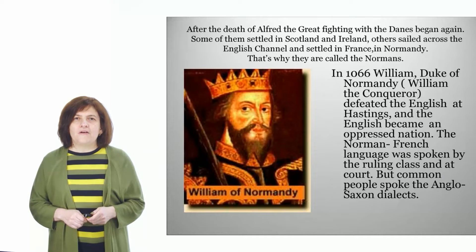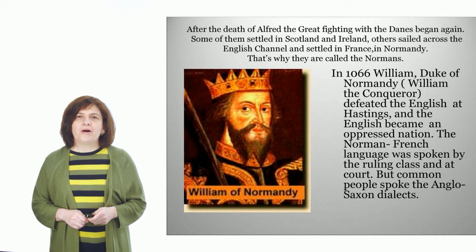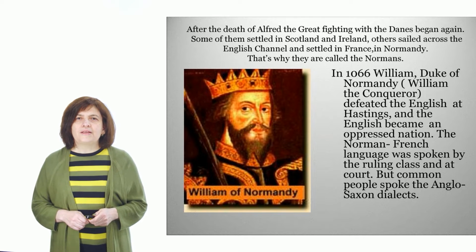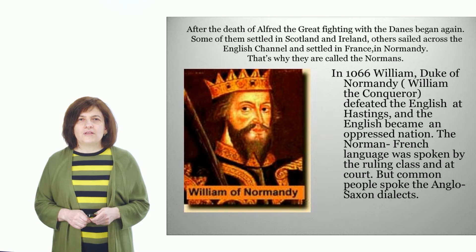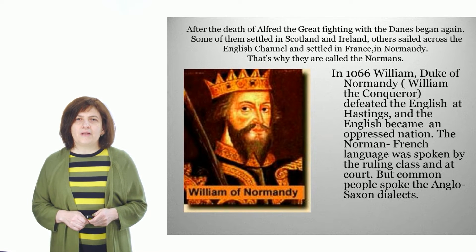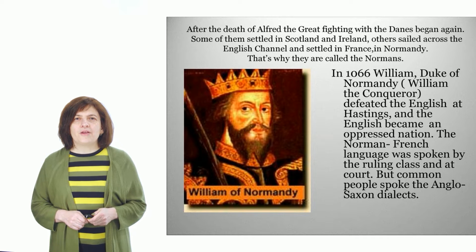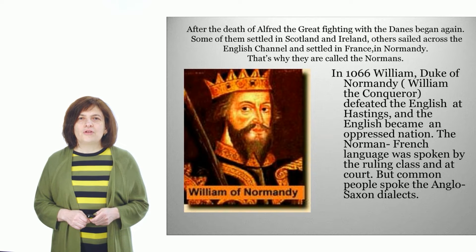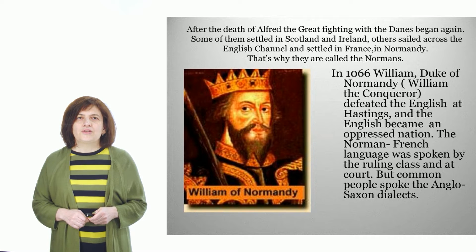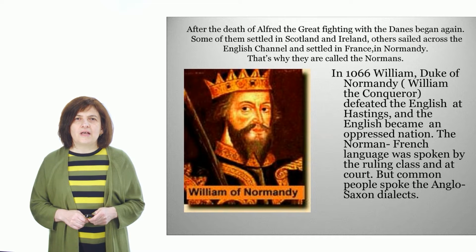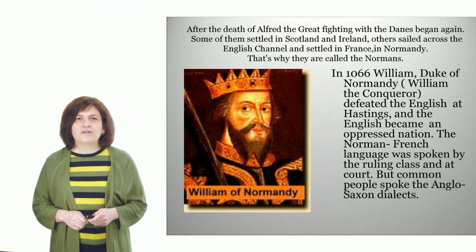When King Alfred died, fighting with the Danes soon began again. They occupied the north and east of England and also sailed over the Channel and fought in France. The land they conquered in the north of France was called Normandy and the people who lived there, the Northmen. In the hundred years that were to follow, they began to be called Normans. The Danes, who had occupied the north and east of England, spoke a language only slightly different from the Anglo-Saxon dialects. The roots of the words were the same, while the endings were different. Soon, these languages merged with one another as they were spoken by all classes of society.